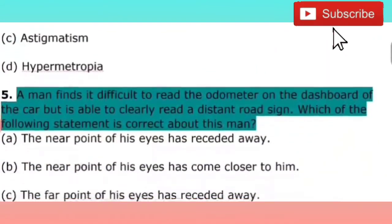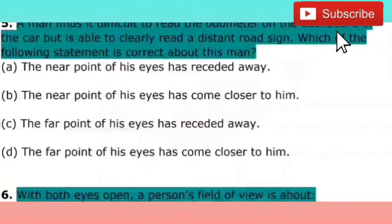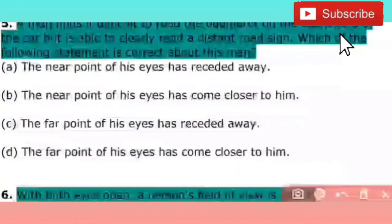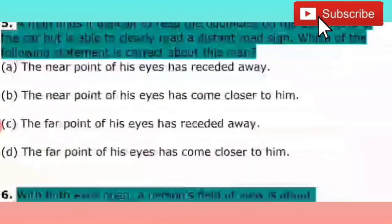The next question: a man finds it difficult to read the odometer on the dashboard of the car but is able to clearly read a distant road sign. Which of the following statements is correct about this man? Options include: the near point of his eye has receded away; the near point has come closer to him; the far point of his eye has receded away. The right answer is that the near point of his eye has receded away.